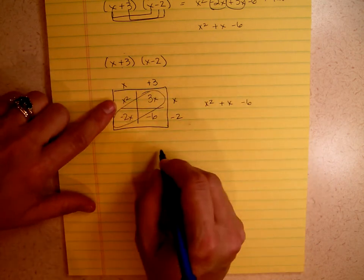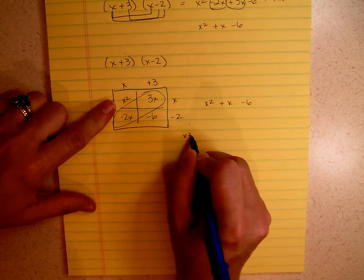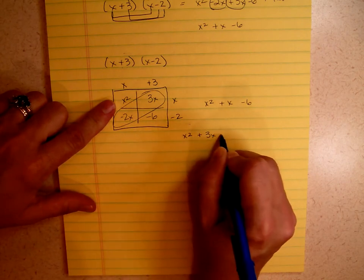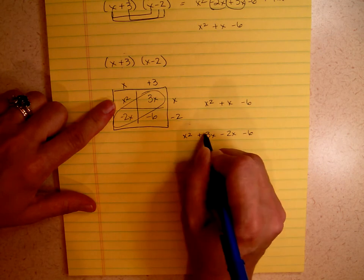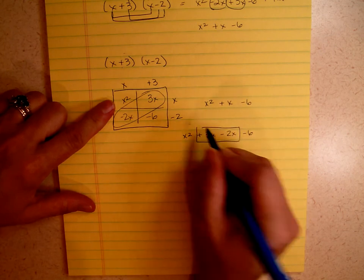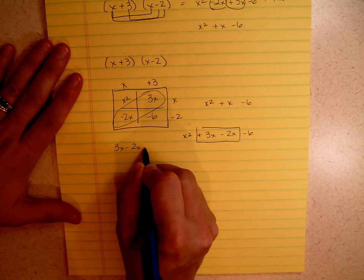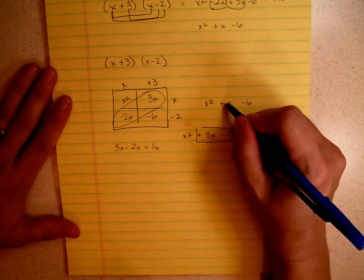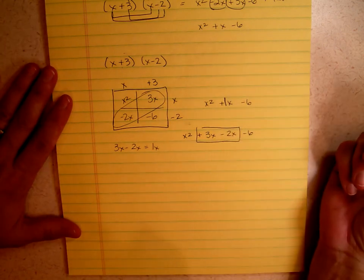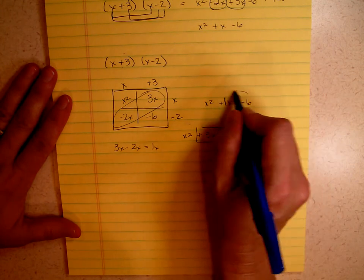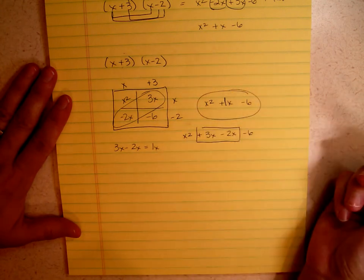Well, if I wrote this whole thing out, let's say we're going to write every term. x squared plus 3x minus 2x minus 6. I can see that I can put these together. 3x minus 2x gives me 1x. And again, remember there is a 1 there. It's invisible, but it's really there.